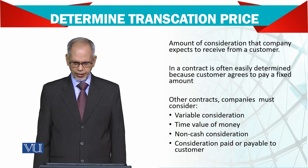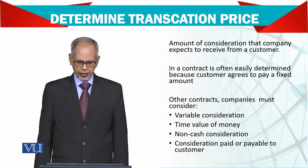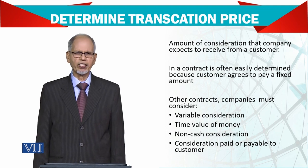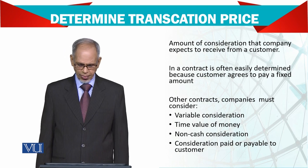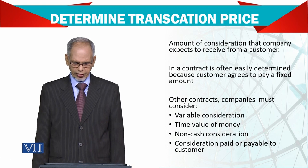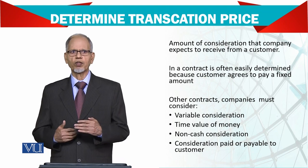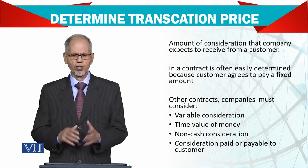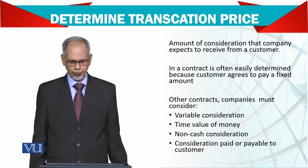The amount of consideration expected to be received from a customer in a contract is often easily determined because the customer agreed to pay a fixed amount — usually that's how it is. However, in certain cases, companies must consider if there is a variable consideration. For example, if you do this job you will get this much, and if you add more, the total amount varies. It's not fixed — it depends on what you are expecting from your supplier and the buyer.